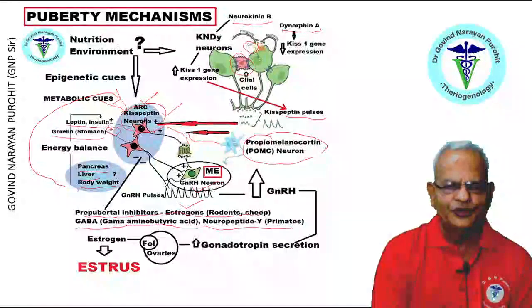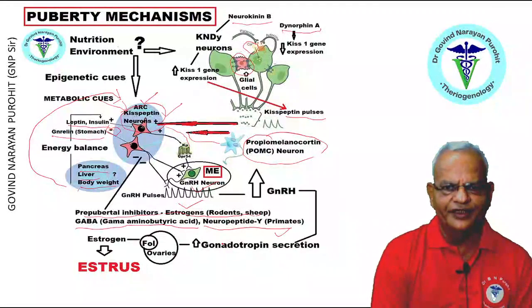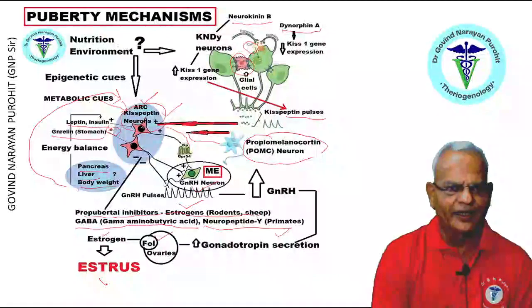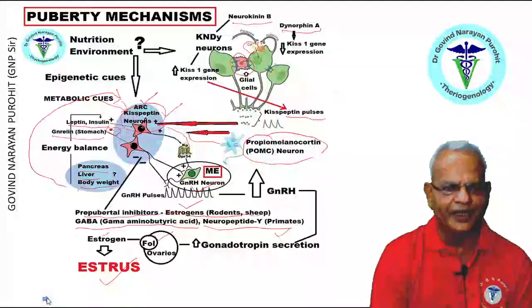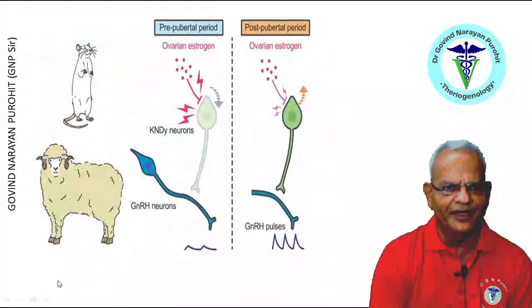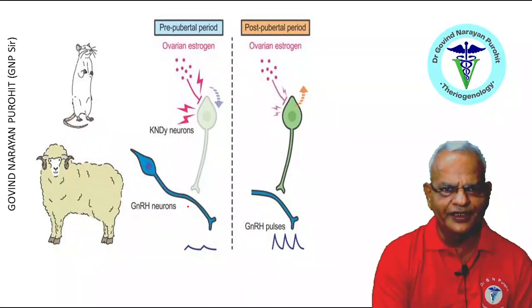When kisspeptin secretion is stimulated, GnRH secretion is stimulated. Increased GnRH causes increased gonadotropin secretion, which stimulates the follicles in the ovary to secrete estrogen, and the animal starts coming into estrus. In brief, this is the mechanism of puberty. During the pre-pubertal period, ovarian estrogens have a negative role on the KNDY neurons and the GnRH neurons. But post-puberty, they have a stimulatory role on the KNDY and GnRH neurons.